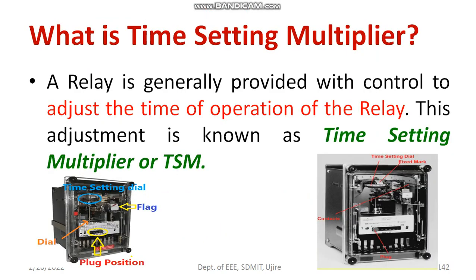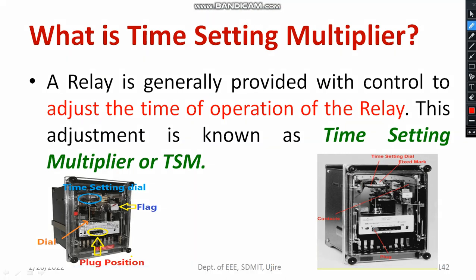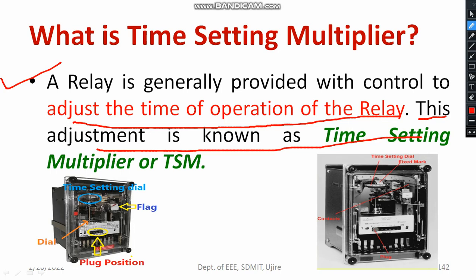What is the importance of time settings? The actual operating time of the relay is quite important. The time setting multiplier — somebody will call it as time multiplier setting — decides the actual operating time of the relay. A relay is generally provided with control to adjust the time of operation. This adjustment is known as time multiplier setting, or time setting multiplier. The abbreviation is TSM.